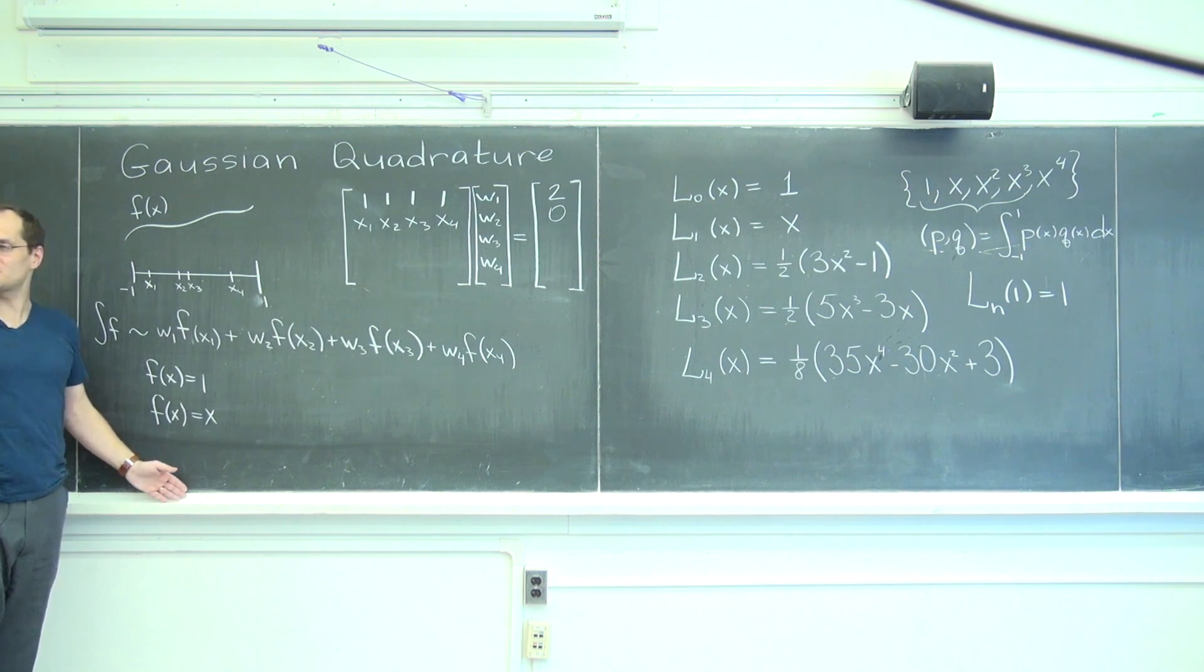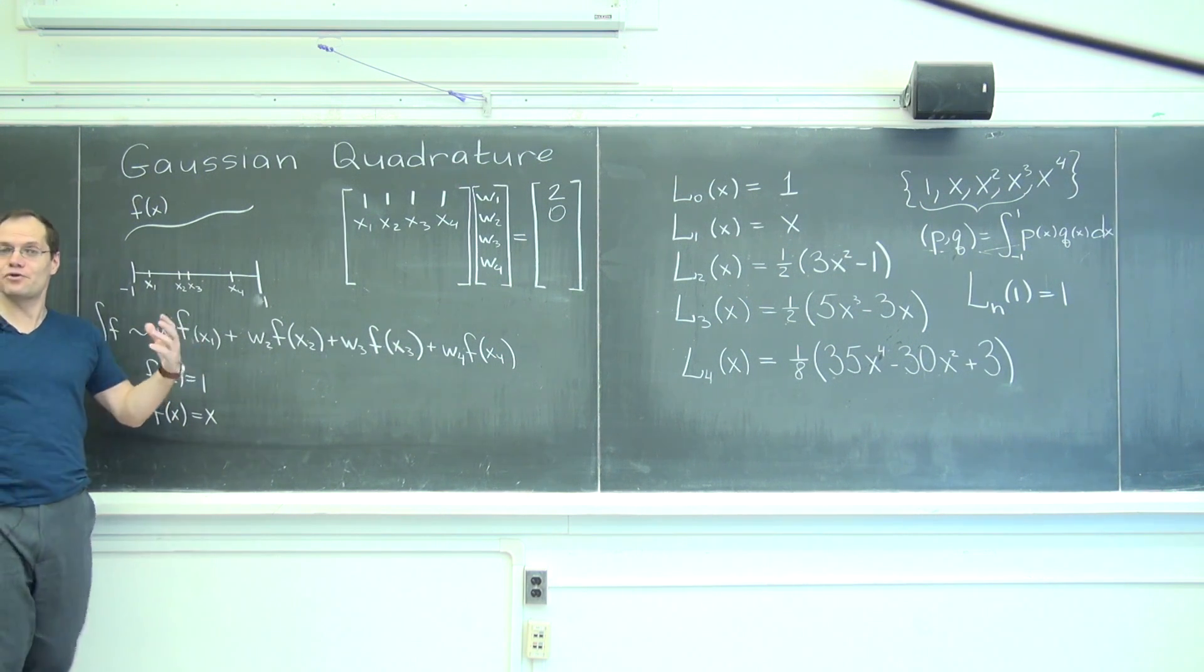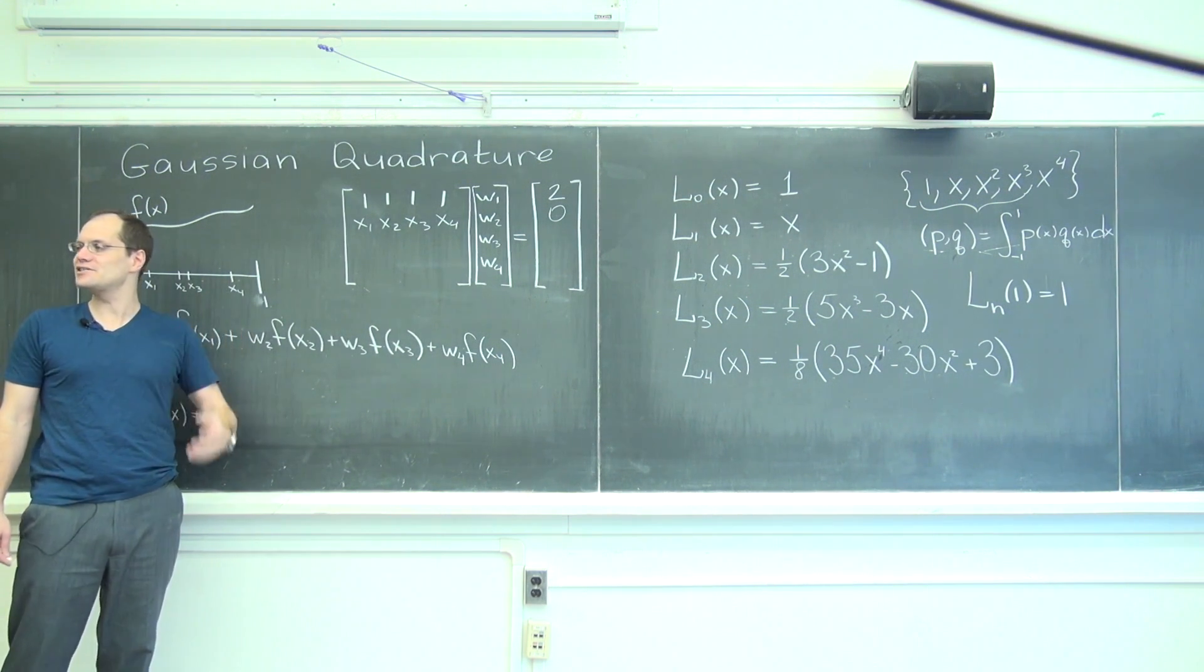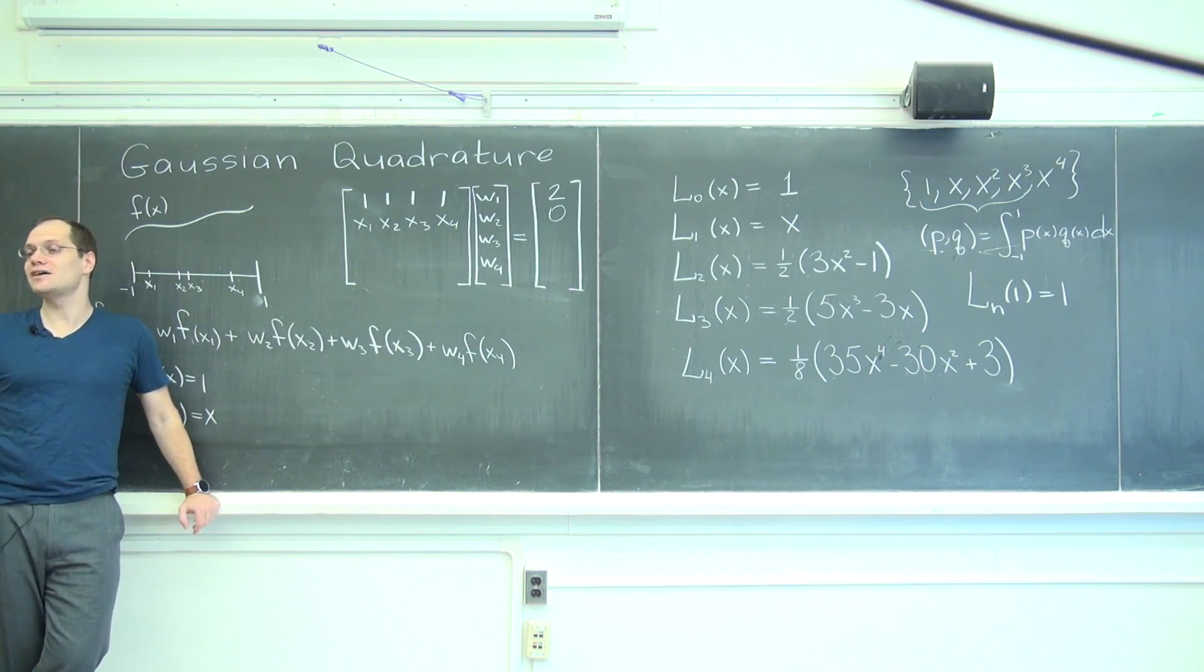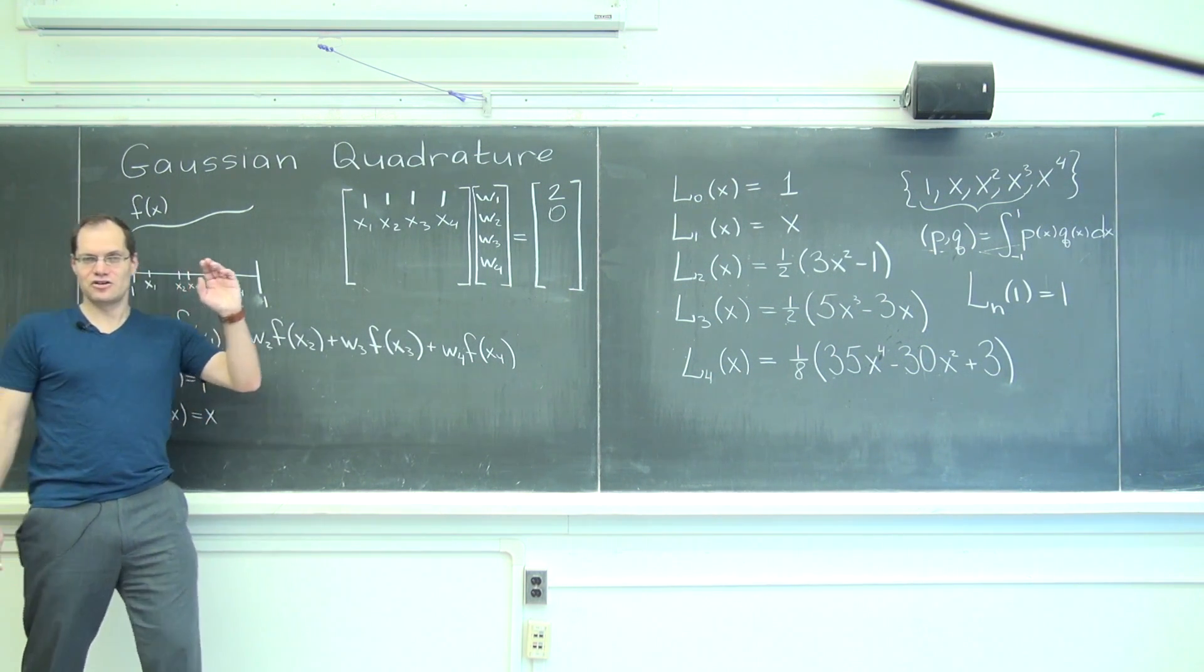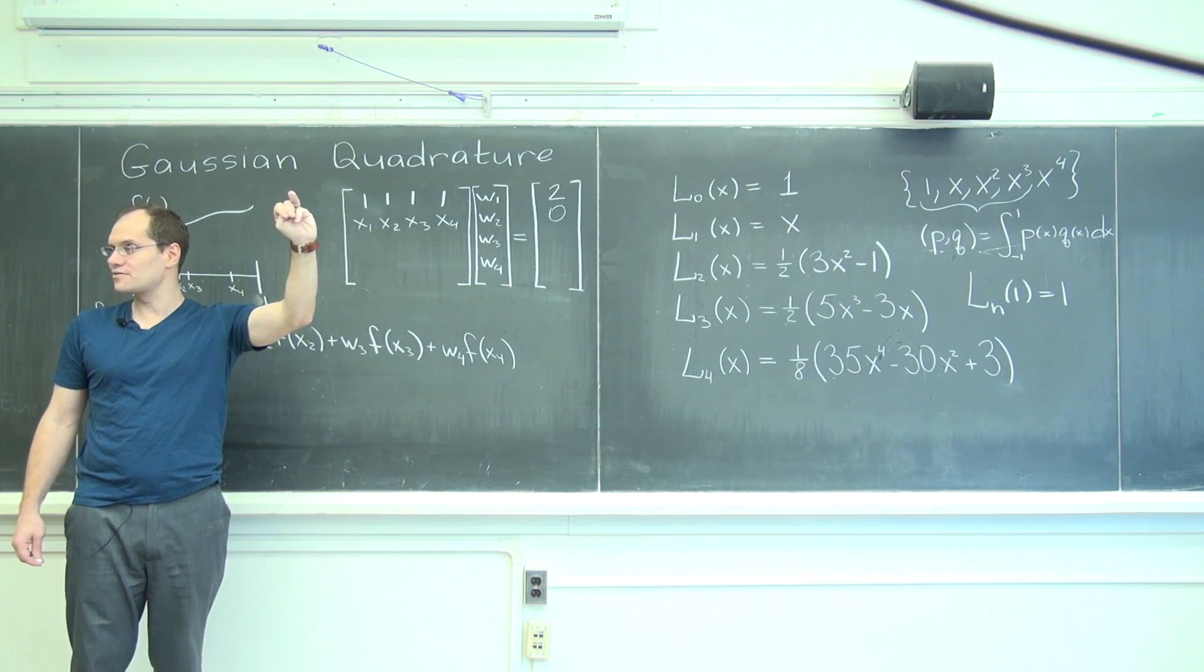So I have, I've accomplished two things if I satisfy these two equations. I will have a scheme that does constants and linear functions exactly, so that I can go do the same thing for the square and the cube. And x to the fourth? No, not x to the fourth, right? I did it on purpose, because then I will have run out of the four variables that I have. I can only satisfy four equations.